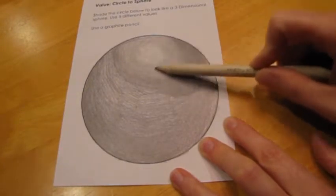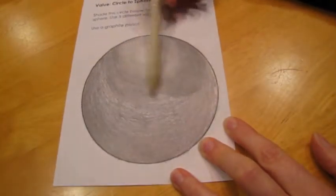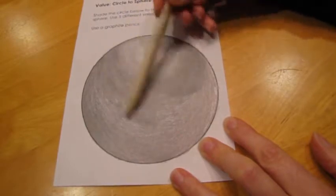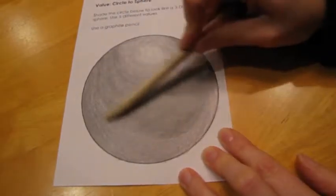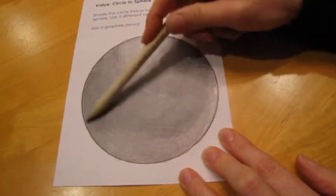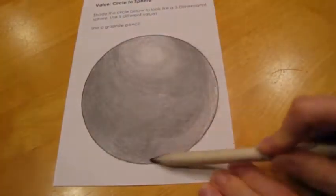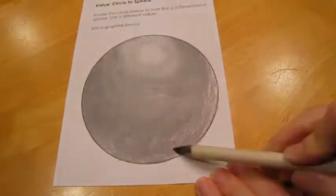Now as you go over this, what this is doing is taking the graphite and pushing it into your white areas so that your blending makes the sphere look a little bit more smooth. It helps get rid of some of those little white spaces.